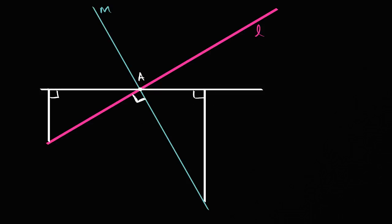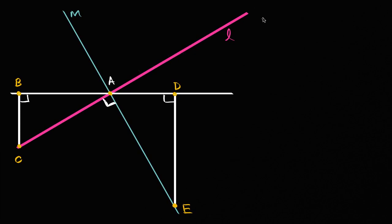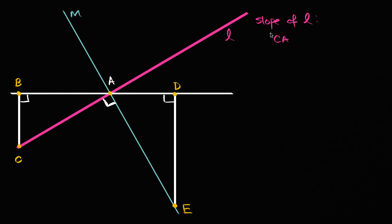Let me now set up some points. That's point A. Let's call this point B, this point C, this point D, and this point E right over here. Now let's think about what the slope of line L is. The slope of L — you could view line L as the line that connects points C and A, so it's the slope of line CA.